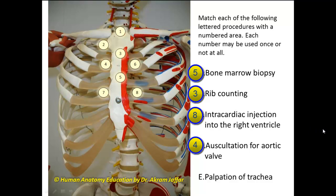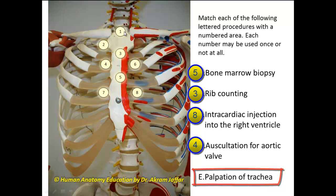Which area is used for palpation of the trachea? The trachea is the most anterior structure located behind the jugular notch, and so it can be palpated here at position 1.